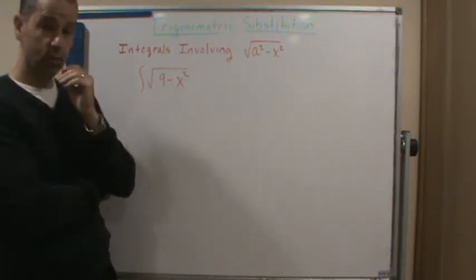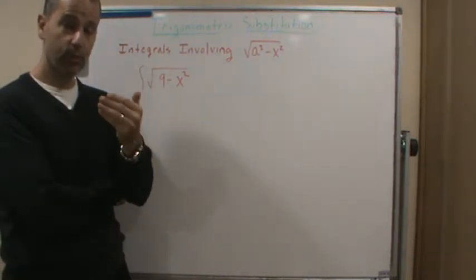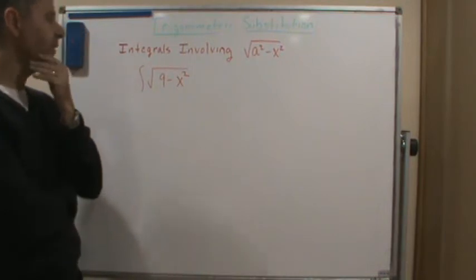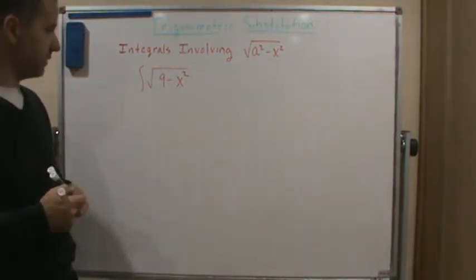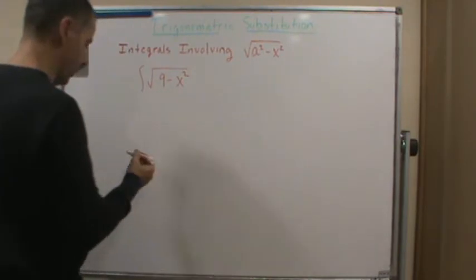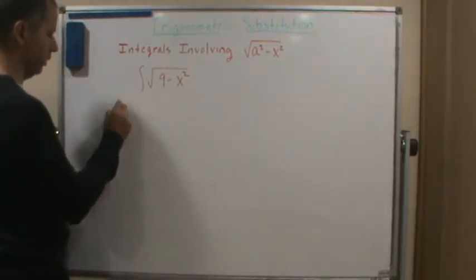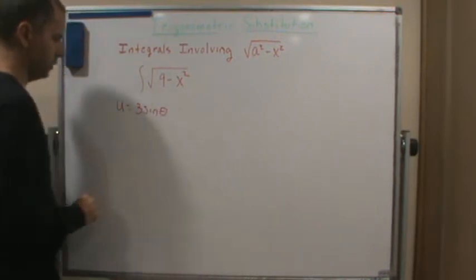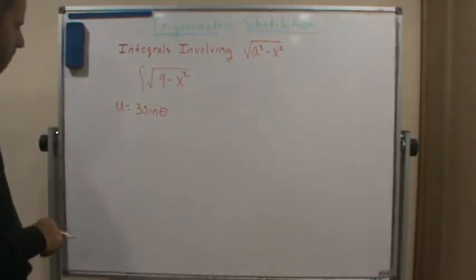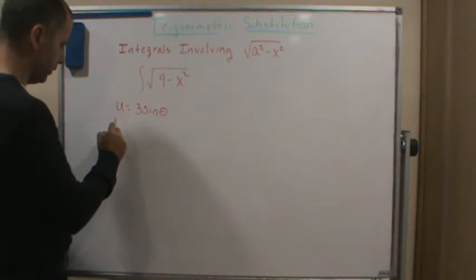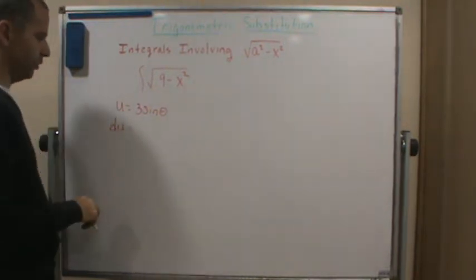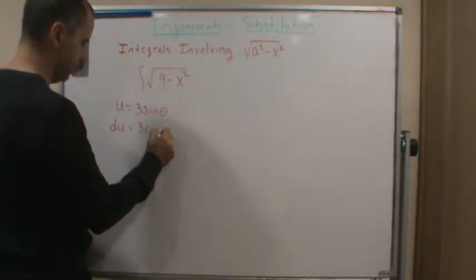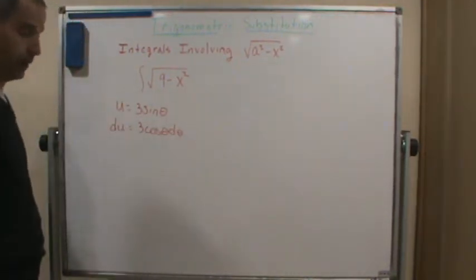But the substitution we're going to be doing is we're going to substitute using a trig function. And what we're going to use in this case is we're going to use u equal to 3 sine theta. And we're going to use du then is 3 cosine theta d theta.